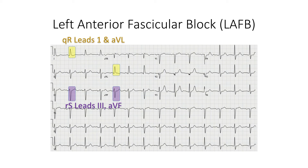The QRS is prolonged, but not larger than 3 small boxes, so we don't quite have full left bundle branch block yet. Finally, notice that because lead 1 is positive but foot is negative, we have a left axis deviation, and this is at least negative 45 degrees in severity. All these features combined show the classic footprint of left anterior fascicular block.